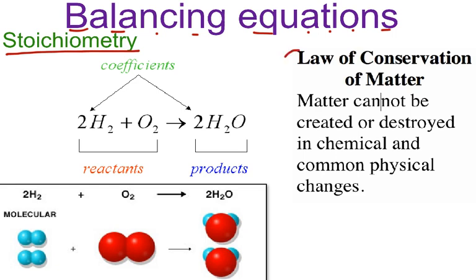We want to follow the law of conservation of matter, or the law of conservation of mass, where matter cannot be created or destroyed in normal chemical reactions. I say normal chemical reactions because when we get to chemistry 2, we'll see that in nuclear chemistry, matter can actually be transferred to energy, and that's called mass defect — but we'll talk about that later.